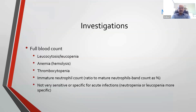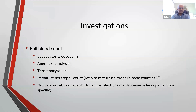In terms of the blood count, we are looking for leukocytosis and leukopenia. There can be associated anemia from hemolysis, or anemia of prematurity and other causes according to the clinical situation. Thrombocytopenia is frequently an association, especially with gram-negative sepsis or where there is sepsis associated with NEC.